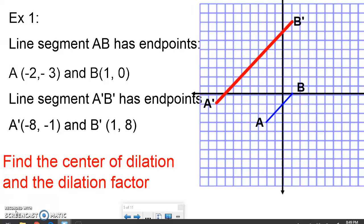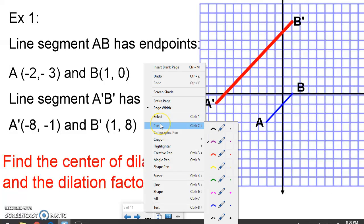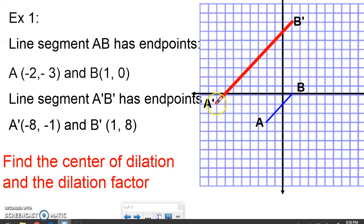So we have line segment AB and line segment A'B'. So keep in mind, A'B' came second because it has the primes. So I know my segment's getting larger. The reason this is different than yesterday is because now I have the pre-image and the image, and I need to find the center of dilation and the scale factor.